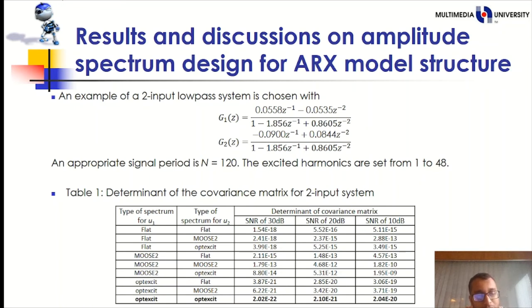An example of a two input low-pass system is system G1 and system G2 where the appropriate signal period is N equals to 120. The excited harmonics are set from 1 to 48. The determinant of covariance matrix is computed for various combinations of the signal U1 and U2. Those signals are designed based on SISO system and used in combination for the MISO system. For further investigation, the results are averaged from 100 runs and summarized in table 1.